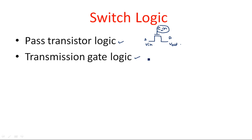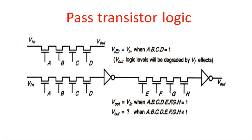The transmission gate addresses a drawback found in pass transistor logic, which I'll explain individually. In pass transistor logic, a series of pass transistors can be connected. A single pass transistor has a control input — the input is transferred to the output only when the control input is at logic 1.